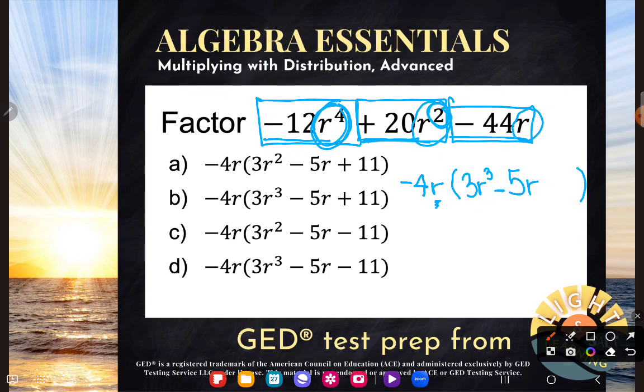Last term, negative 44r. If I divide out the negative four, negative 44 divided by negative four is positive 11. And I had an r, and I divided it out. It canceled. There's no r's left in that last term. And I can see that whether I do it forwards or backwards, I'm still going to end up with B as the correct answer.